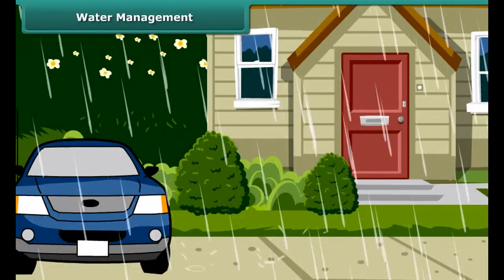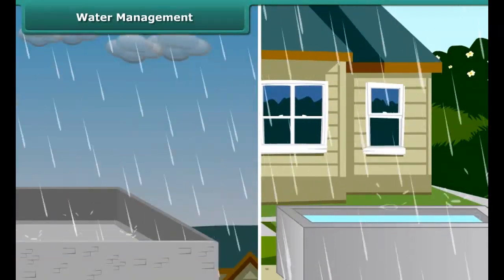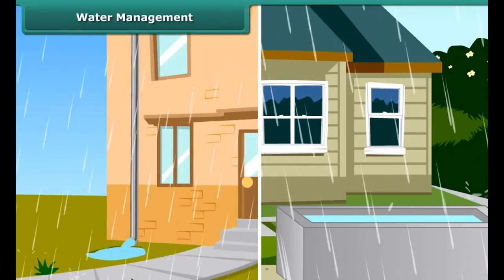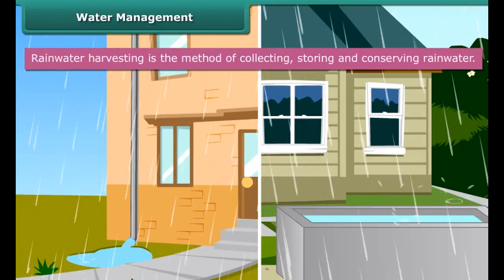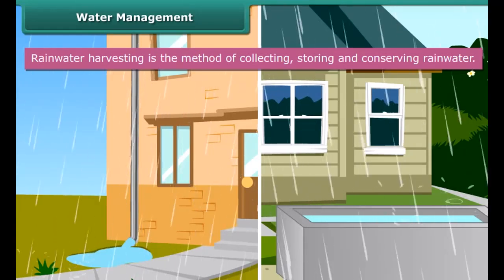If we collect and store all the rainwater that falls on terraces, roads, and pavements instead of letting it run into ditches, we could have vast reserves of water. Collecting, storing, and conserving rainwater is called rainwater harvesting.